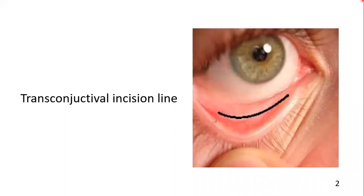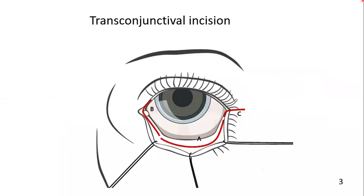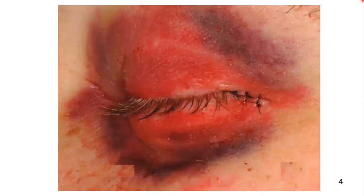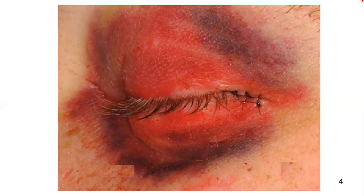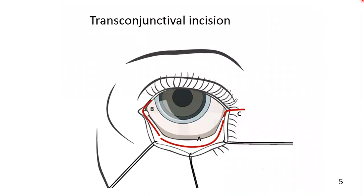Here you can see the incision line. The main advantage of transconjunctival approaches is that they produce excellent cosmetic results because the scar is hidden in the conjunctiva. If a canthotomy is performed in conjunction with the lateral extension approach, the only visible scar is the lateral extension, which is an inconspicuous scar. Another advantage is that these techniques are rapid and no skin or muscle dissection is necessary. A disadvantage may be limited access of non-extended or non-combined approaches in comparison to lower eyelid skin incision.